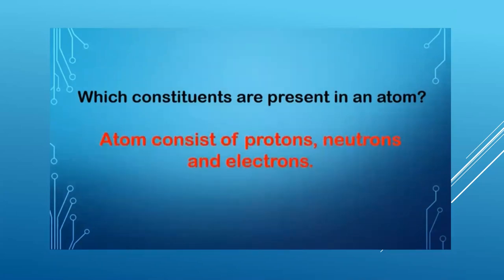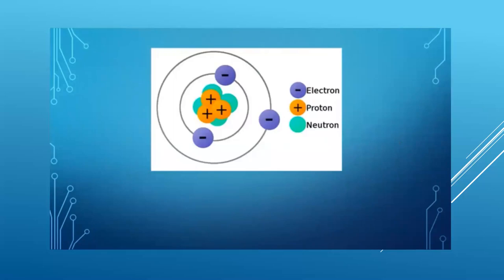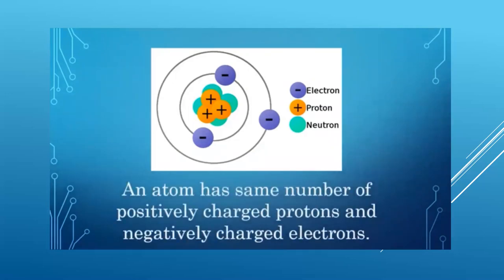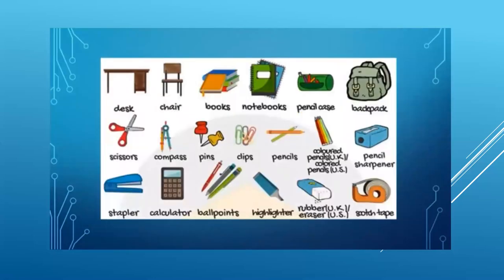An atom consists of proton, neutron, and electrons. From this picture we can see that the atom is filled with electrons, protons, and neutrons. One more thing we notice from this picture is that an atom has the same number of positively charged protons and negatively charged electrons, so an object doesn't show any charge. Since atoms contain charged particles, plenty of electrical charge is filled in the objects around us — all objects are made up of atoms and therefore consist of charge.